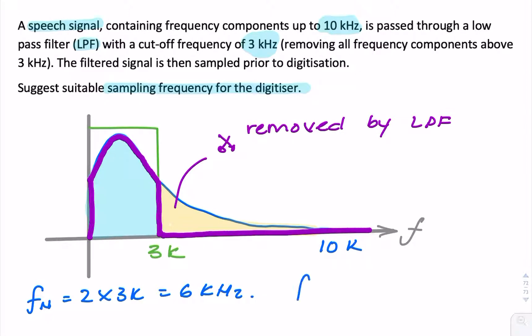And the sample frequency will have to be greater than or equal to the Nyquist frequency. So it could be, for example, 7 kHz, 10 kHz, 12 kHz. It could be anything in that region.